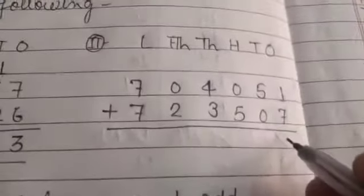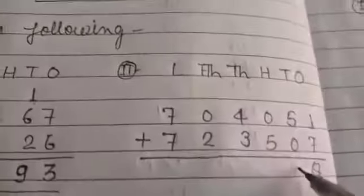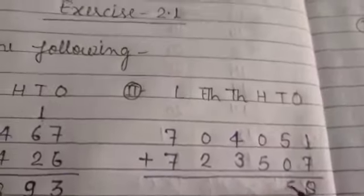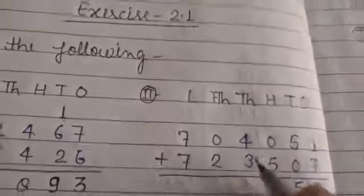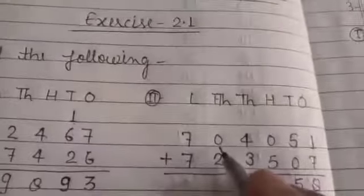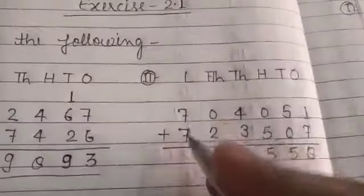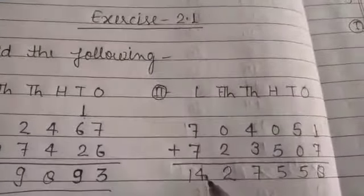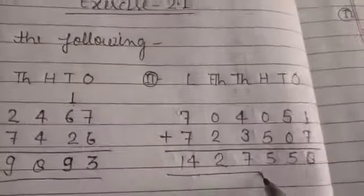Question number second: 1 plus 7 is equal to 8. 5 plus 0 is equal to 5. 0 plus 5 is equal to 5. 4 plus 3 is equal to 7. 2 plus 0 is equal to 2. 7 plus 7 is equal to 14. This is the answer.